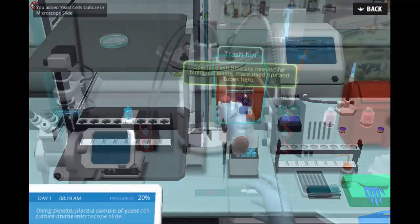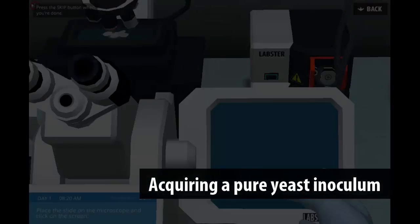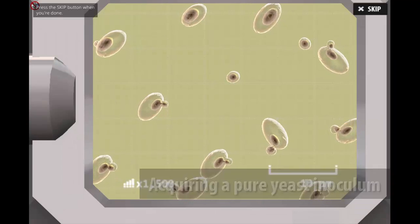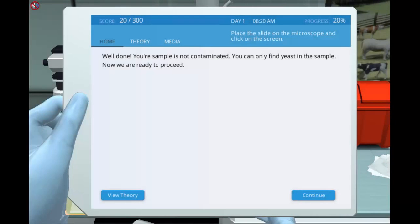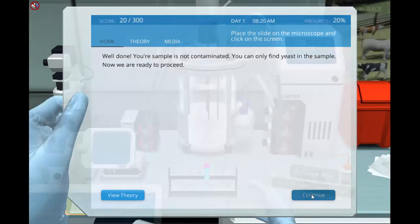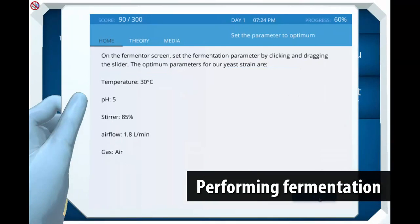The lab stresses the importance of acquiring a pure yeast inoculum in order to get the highest bioethanol production. After acquiring a pure inoculum, students perform the first fermentation.